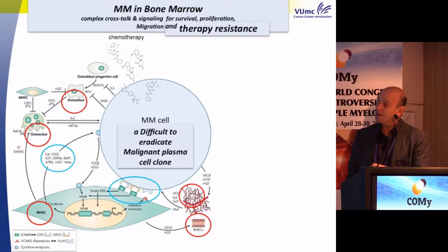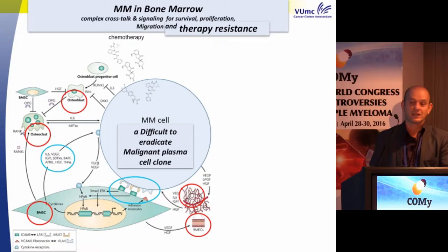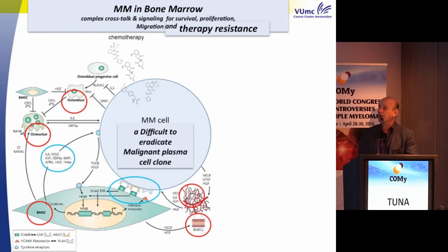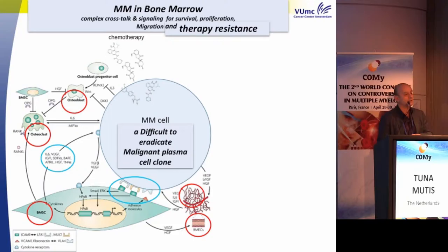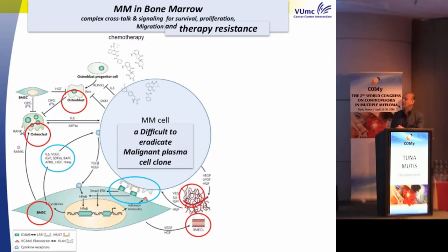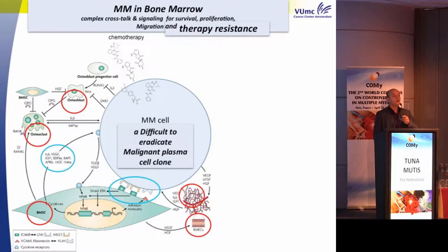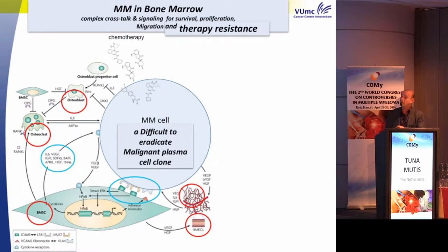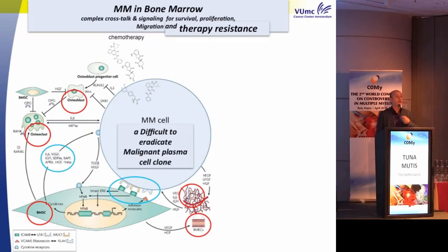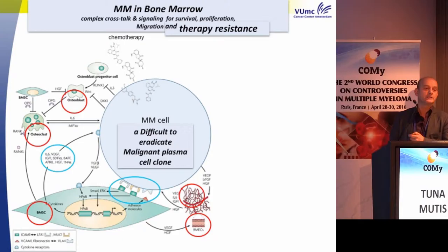If you start with a very simple myeloma cell — we have been treating these myeloma cells for many years with chemotherapy — we realize this is a difficult-to-eradicate malignant plasma cell clone. But the myeloma cell is not doing this alone. When we analyze the microenvironment, we quickly realize the myeloma cell is surrounded in the bone marrow by stromal cells, endothelial cells, extracellular matrix, osteoblasts, and osteoclasts. Through intensive crosstalk via cytokines and cell-cell interactions, the myeloma cell is able to survive, proliferate, and escape therapy, because these signaling pathways induce therapy resistance.